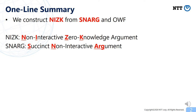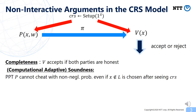I will explain what NIZK and SNARK are. Both are types of non-interactive arguments, and especially we focus on those in the CRS model in this work. In this model, a trusted third party runs a setup algorithm to generate a common reference string, distributed to both Prover and Verifier. The Prover is given a statement x and a witness w of some NP language, generates a proof pi, and sends it to the Verifier. Given the proof pi, statement x, and the common reference string, the Verifier outputs acceptance or rejection.